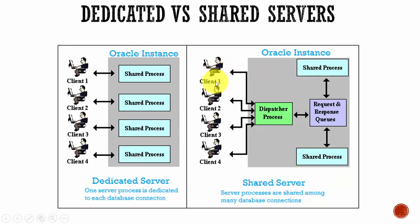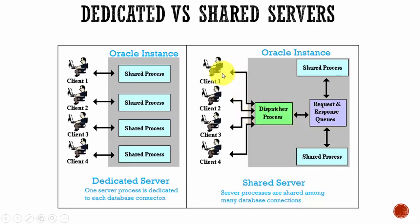How does it work? As soon as a user requests for some data, it goes through the dispatcher process and then the request is placed in the queue. Based on the order received, the request is sent to the shared processes running on the Oracle instance. These processes run and send the response, and then the dispatcher process sends the response to the user. That means every time you send a request to the Oracle instance, it is sent to a queue and waits until its turn comes. Once its turn comes, the request will be processed and the response is sent back to the user.